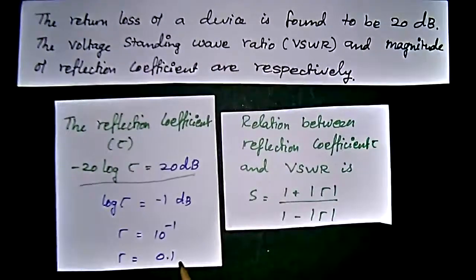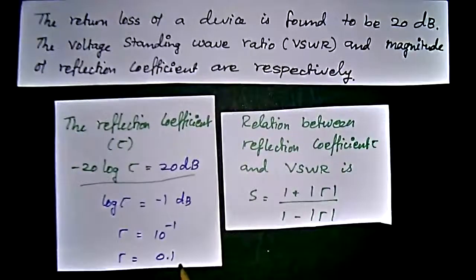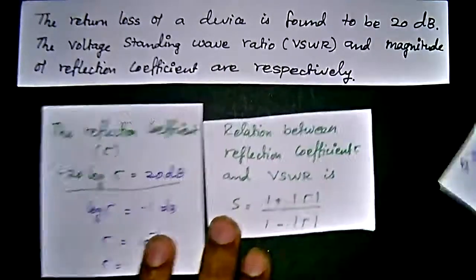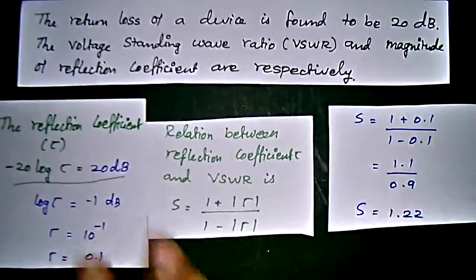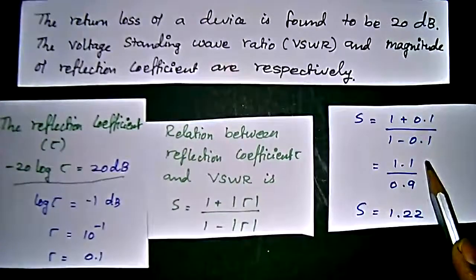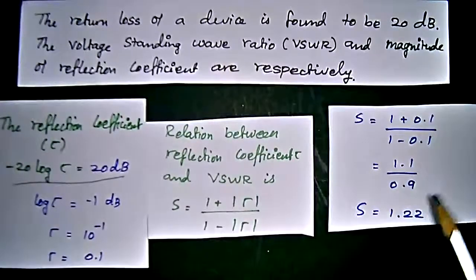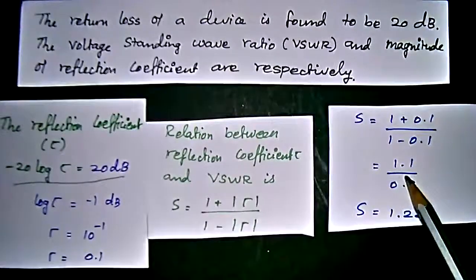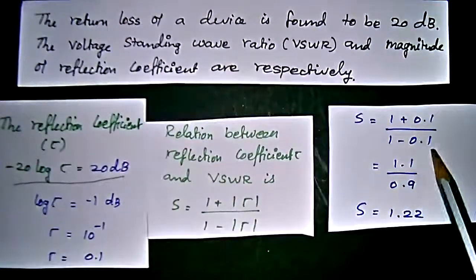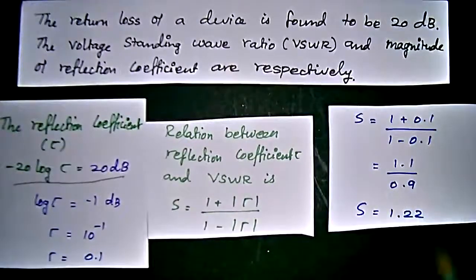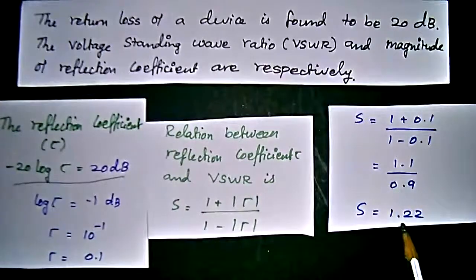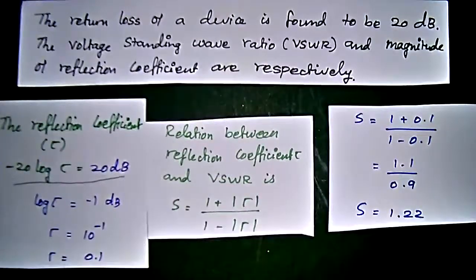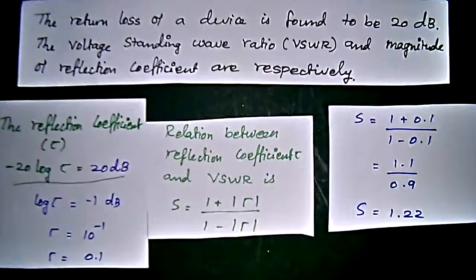We already find the tau value as 0.1, that is, reflection coefficient value as 0.1. So, 1 plus 0.1 divided by 1 minus 0.1, which is equivalent to 1.1. Here 1 plus 0.1 will give us 1.1, 1 minus 0.1 will get us 0.9. So, the S value is 1.22, so reflection coefficient value is 0.1, VSWR value is 1.22.